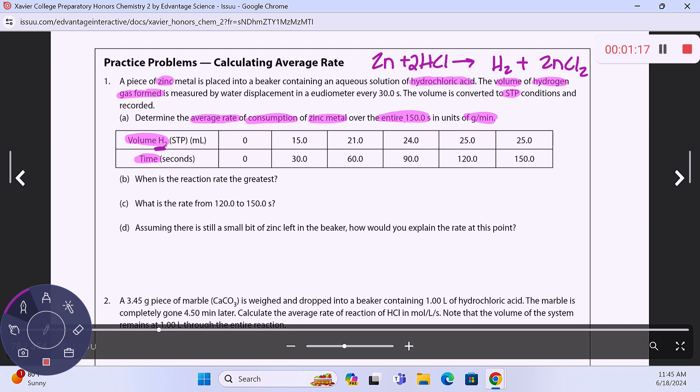So what you're going to do is figure it out over the entire time period. We've got 25 over 150, right? And that's because this is zero. So we're going to be using our initial and our final data points. I don't have much room here, so I'm just going to write it here: 25 milliliters of H2 over 150 seconds.